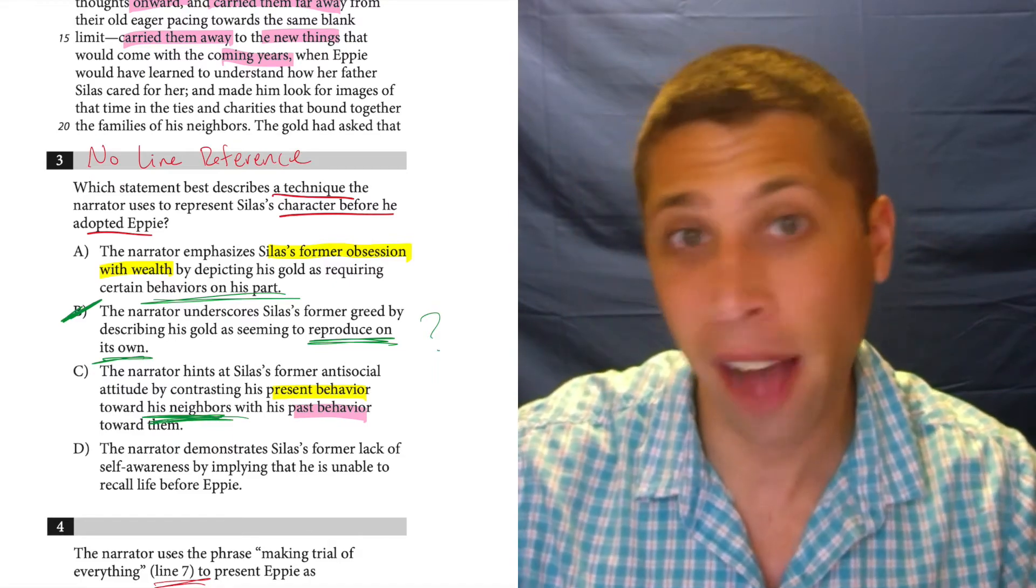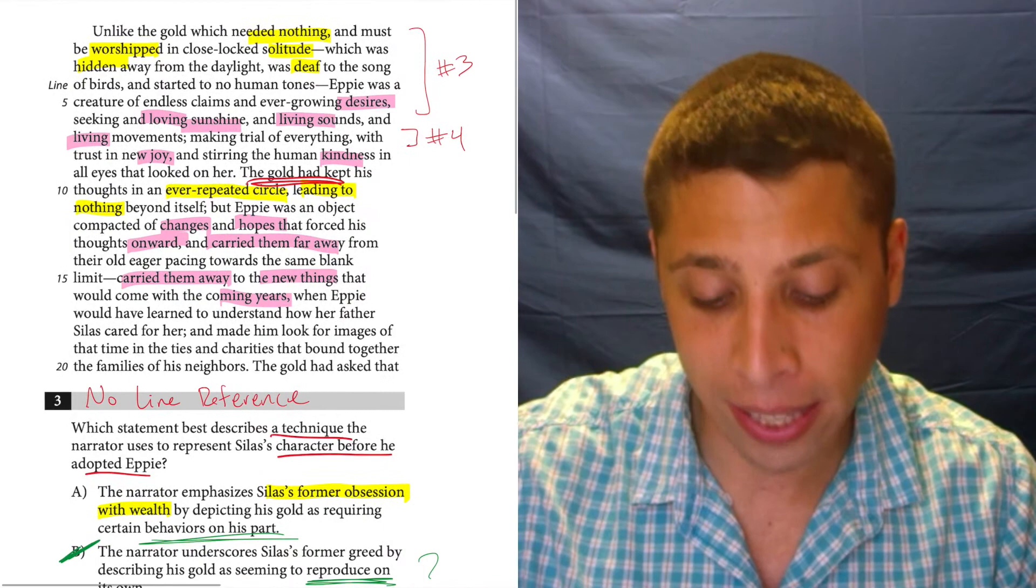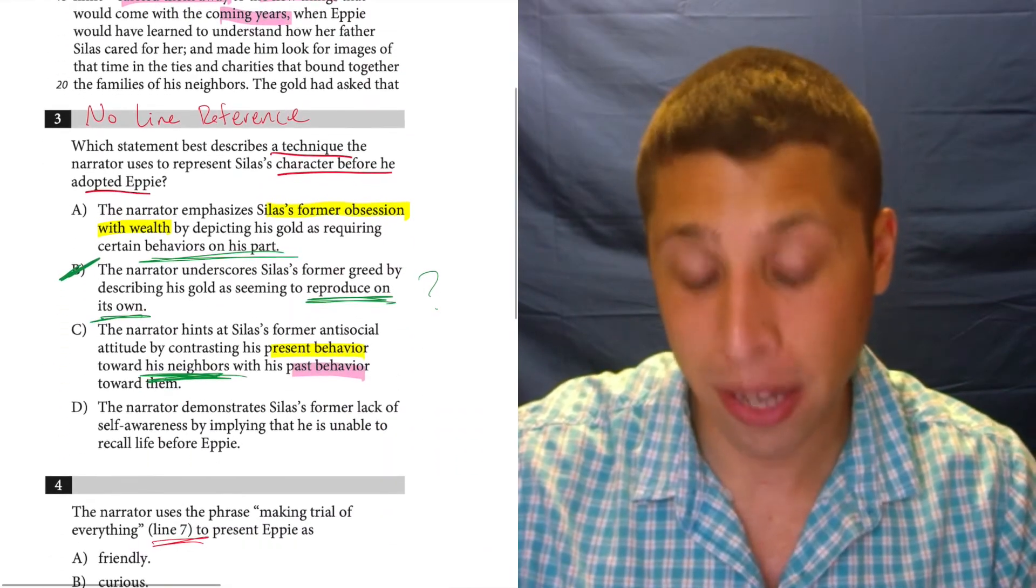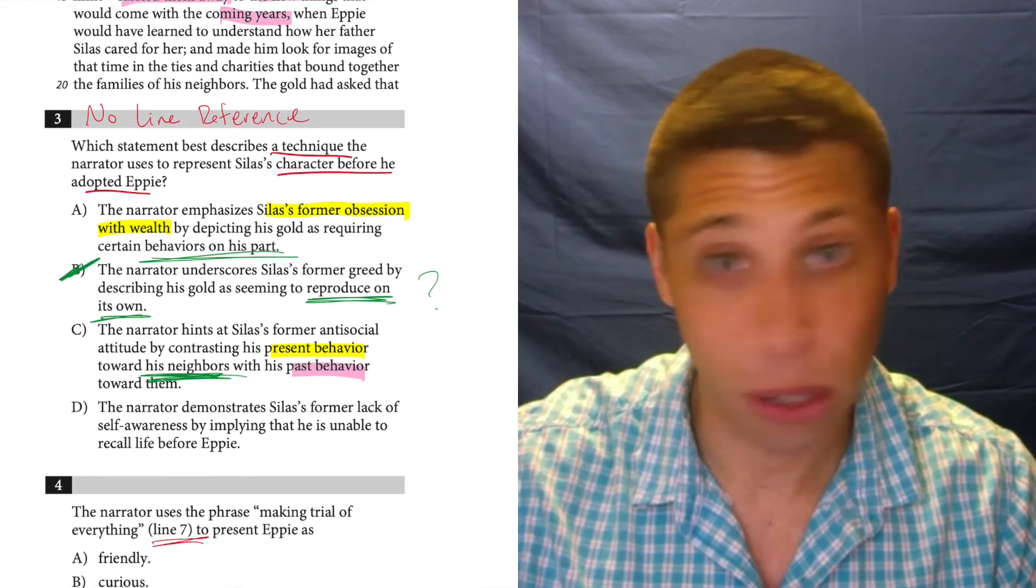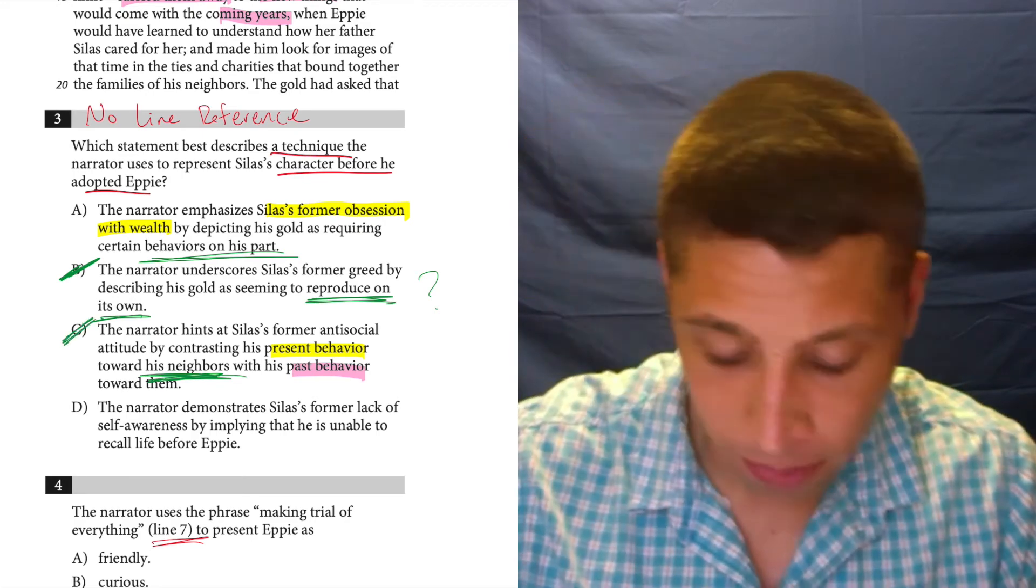Well, I kind of agree that we're talking about his past behavior and his present behavior. So the past, he's like this, it's all bad. The present, now Epi seems to be good. But again, we're talking about Epi, his neighbors. That's a phrase that's not mentioned here. I read a lot, but I didn't read anything about neighbors. I read about Epi. I read about Silas. I read about gold, nothing about neighbors.